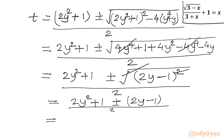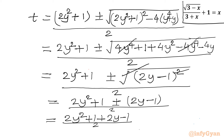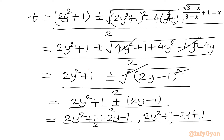With the plus sign: (2y squared plus 1 plus 2y minus 1) divided by 2 — the plus 1 and minus 1 cancel, giving (2y squared plus 2y) divided by 2 equals y squared plus y. With the minus sign: (2y squared plus 1 minus 2y plus 1) divided by 2 equals (2y squared minus 2y plus 2) divided by 2 equals y squared minus y plus 1.